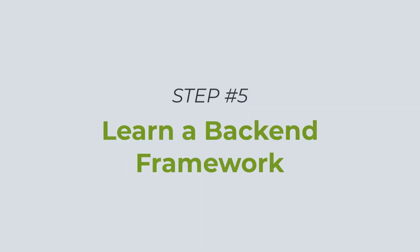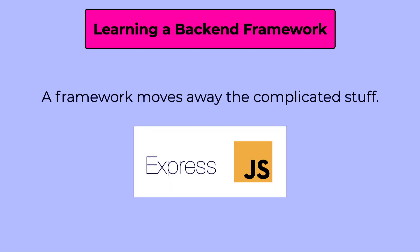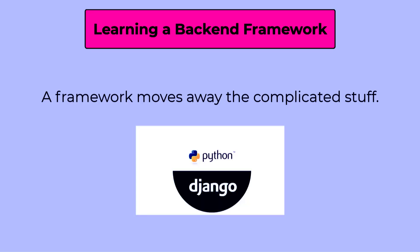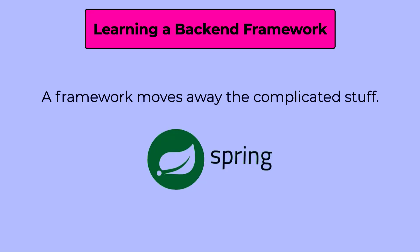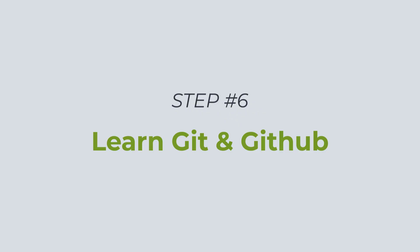Moving forward, you need to learn a backend framework, which makes development easier by removing a lot of complicated code. For Node.js, you should learn Express, which takes away the complexity and makes Node.js extremely easy and powerful. Other languages have their own frameworks too: Python has Django, Java has Spring, PHP has Laravel, and Golang has Echo. A framework also reduces the amount of code a backend developer needs to write.